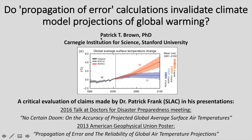My name is Patrick Brown, and I am a climate scientist at the Carnegie Institution for Science at Stanford University. This video is called 'Do Propagation of Error Calculations Invalidate Climate Model Projections of Global Warming?' It will be a critical evaluation of claims made by Dr. Patrick Frank,